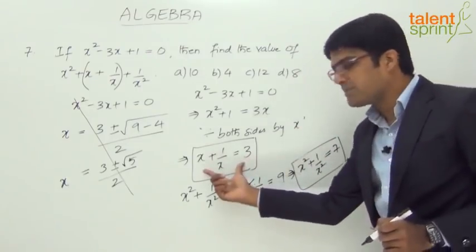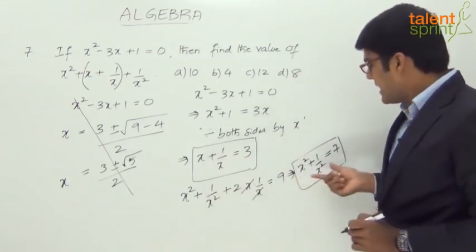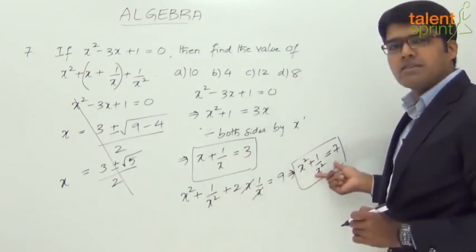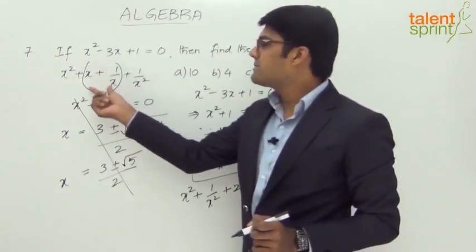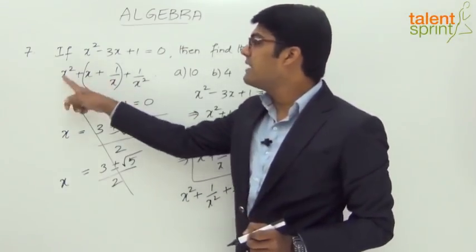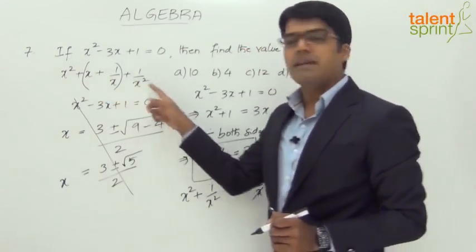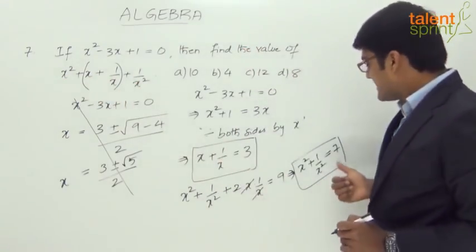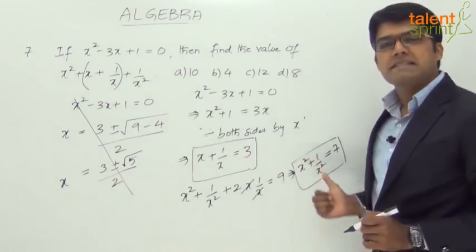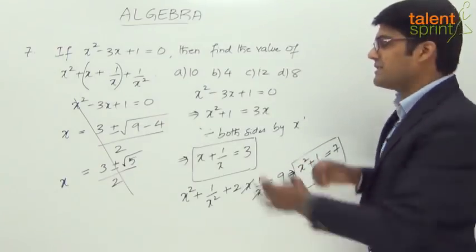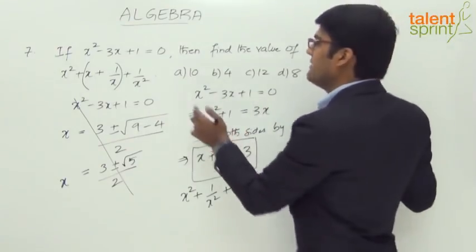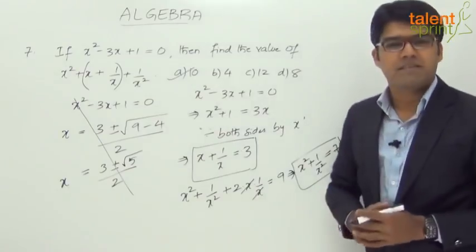So we now know that x plus 1 by x is 3, and x squared plus 1 by x squared is 7. Substituting: x plus 1 by x plus x squared plus 1 by x squared equals 3 plus 7 equals 10. So the answer is 10, which is option A.